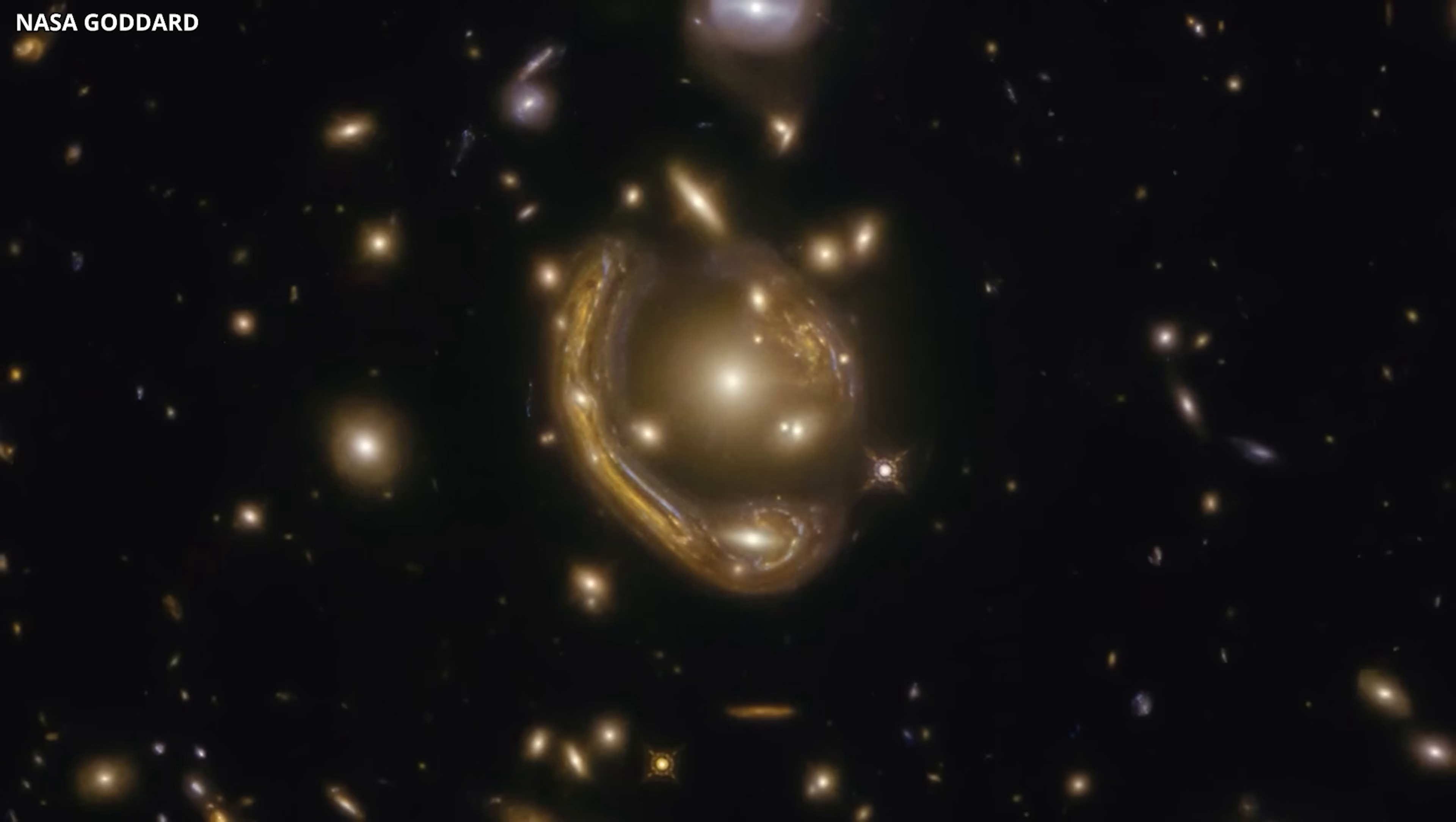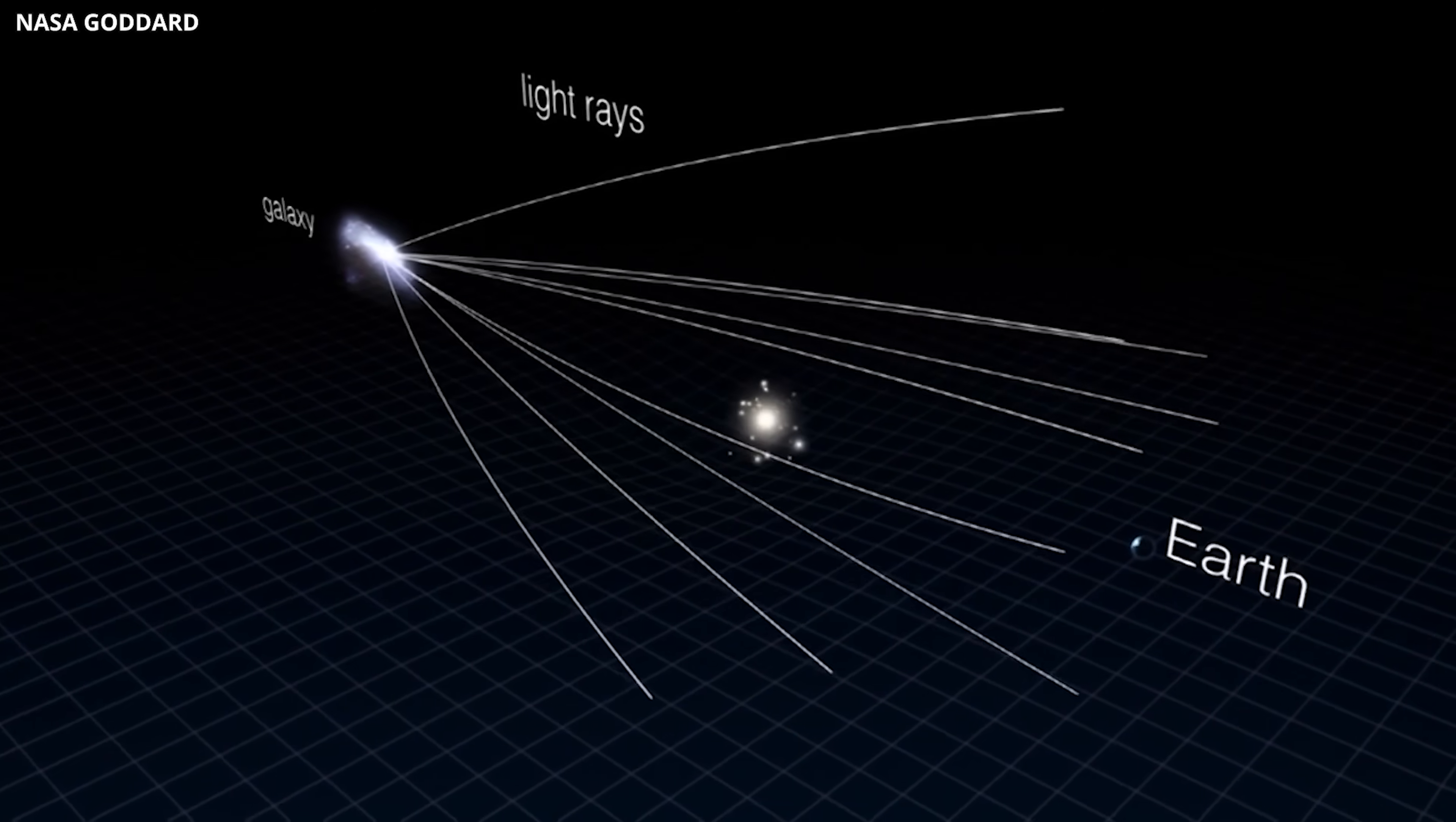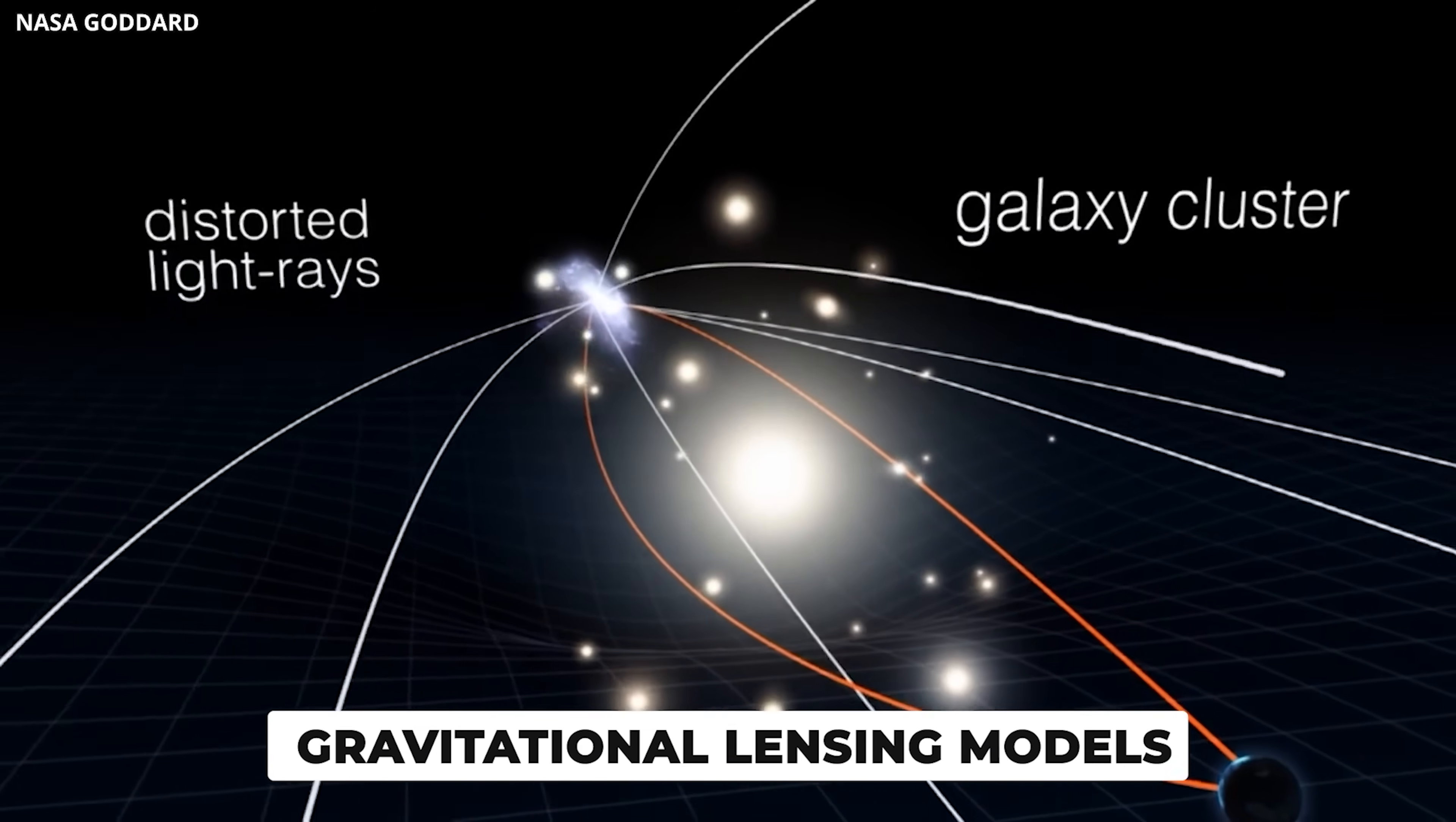This was astonishing. Einstein crosses are predicted to show exactly four images, and a central fifth image simply shouldn't exist under standard gravitational lensing models.